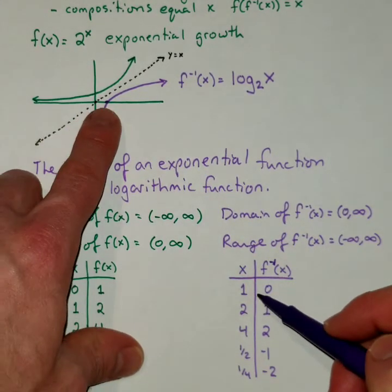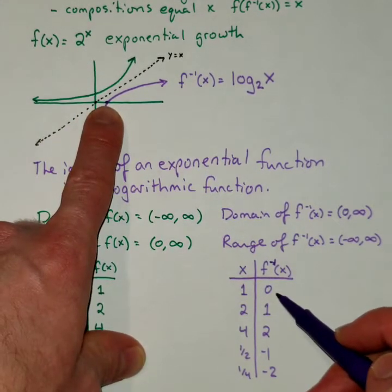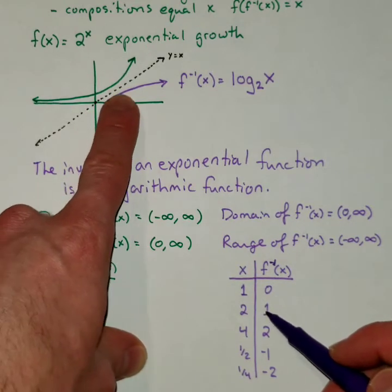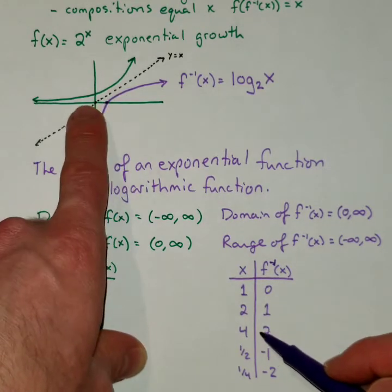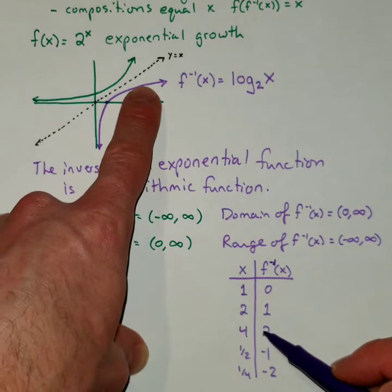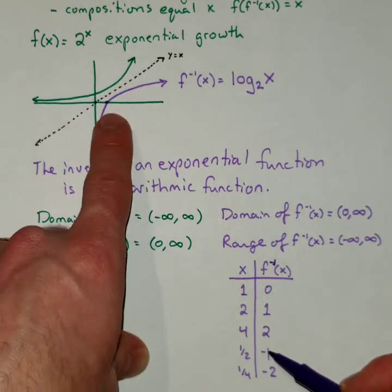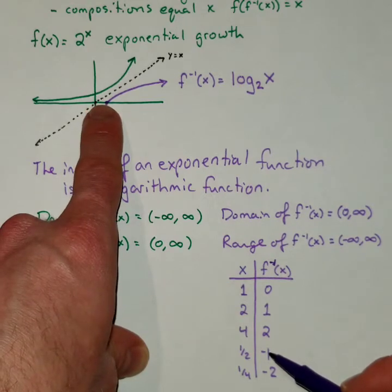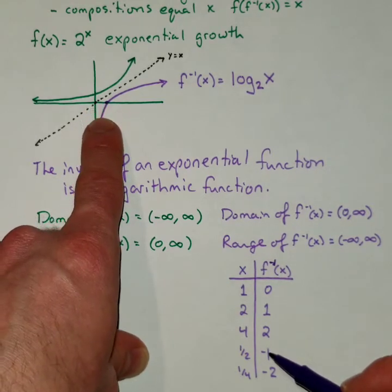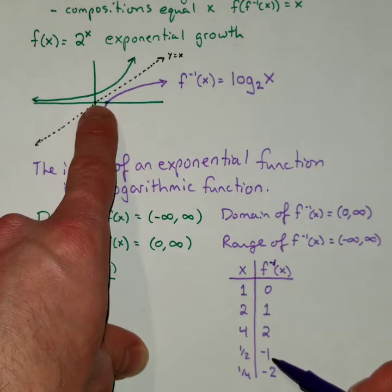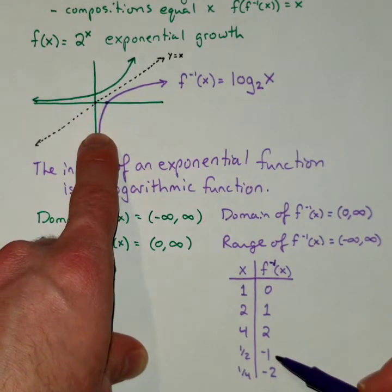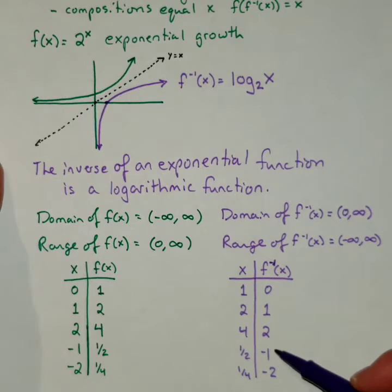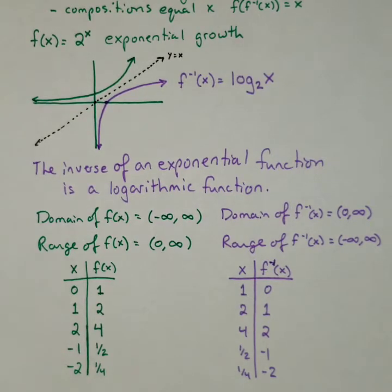So 1, 0 is your x-intercept. 2, 1 should be on the graph. 4, if you come out 4, you go up 2. If you go forward 1 half from the origin, and down to negative 1. And if you go forward 1 quarter, you go down to negative 2. So it kind of makes sense that these ordered pairs all switch places.